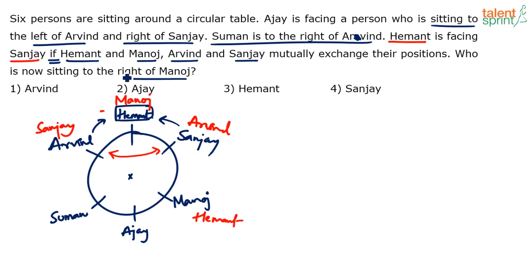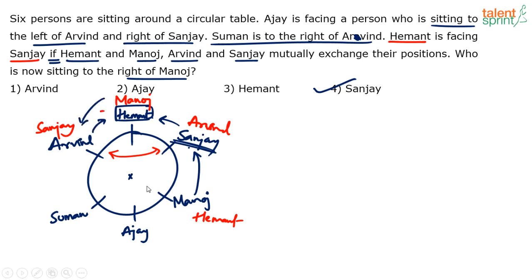Who is now sitting to the right of Manoj? Right of Manoj is anti-clockwise. In the actual arrangement, the immediate right of Manoj is Sanjay. So the answer is option 4 — Sanjay. Even if you consider the assumed red case, right of Manoj still comes out to be Sanjay. Whether you check red to red or blue to blue, right of Manoj is Sanjay — option 4.